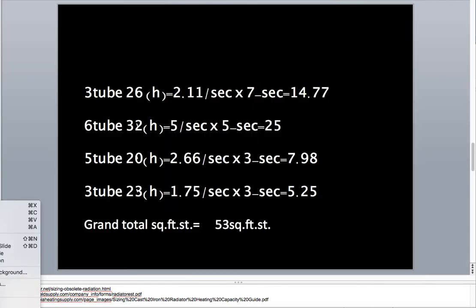So you add those all up. So you get your three-tube, your six-tube, your five-tube, you have a three-tube. You get all your heights here. 26, 32, 20, 32. Your amount of square feet of steam per section. The number of sections. And then your total is your total square feet of steam per radiator. All four of these. This is a small house. 53 square feet of steam. It's just for an example.